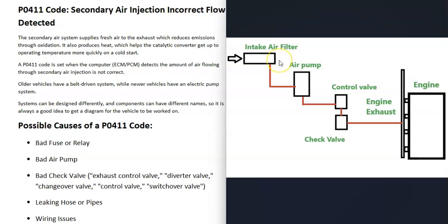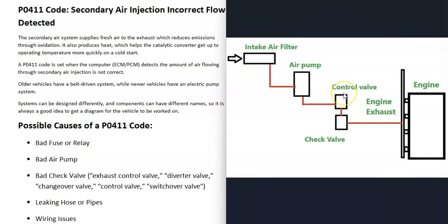The basics of how these systems work: air goes into the system, usually through the main intake air filter on the vehicle, although sometimes these air pumps have their own separate air filter. The air flows to the air pump, which pumps air into the system. On older vehicles the air pump can be belt-driven; on newer vehicles it's electric. From there, air flows to a control valve, which the computer opens and shuts to let air into the system.